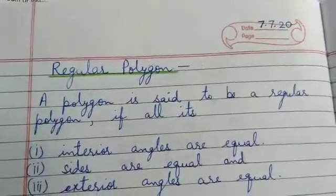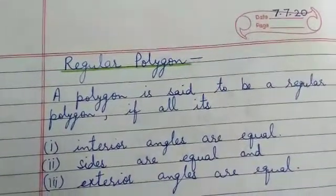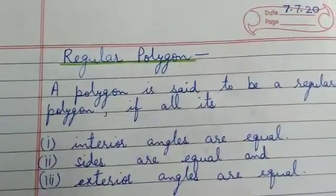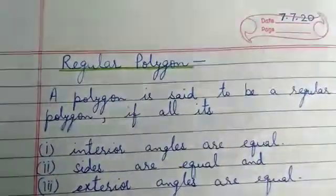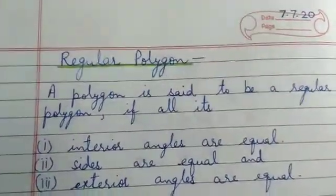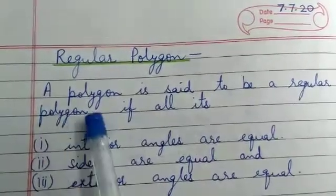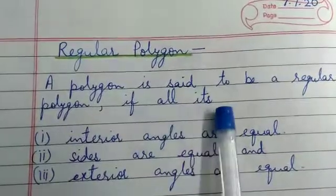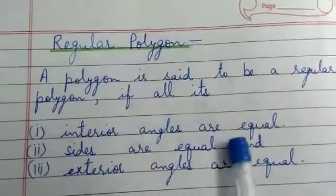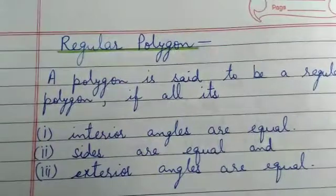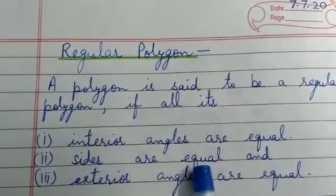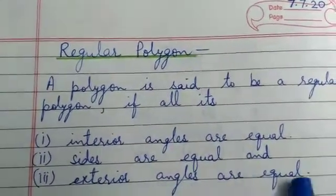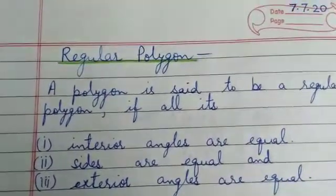Good morning dear students. Today we are going to start the second exercise of chapter 16, which is based on regular polygons. A polygon is said to be a regular polygon if: subpart 1, interior angles are equal; subpart 2, sides are equal; and subpart 3, exterior angles are equal.